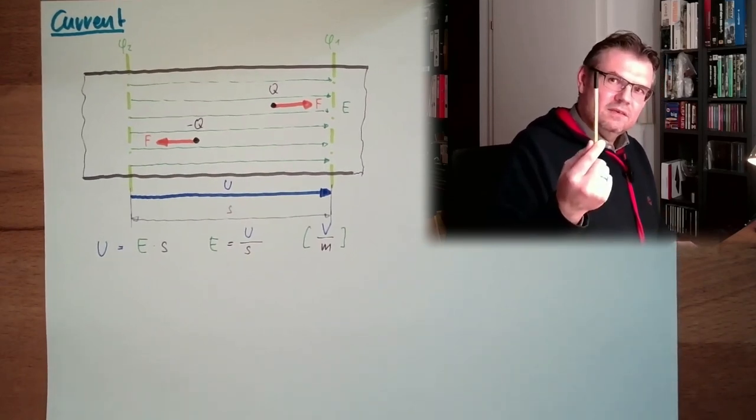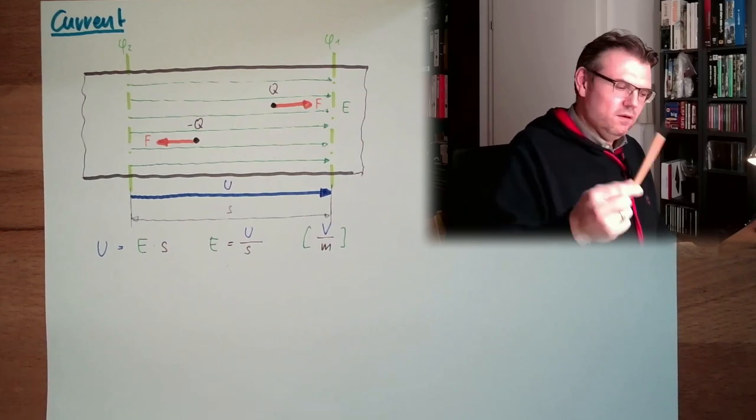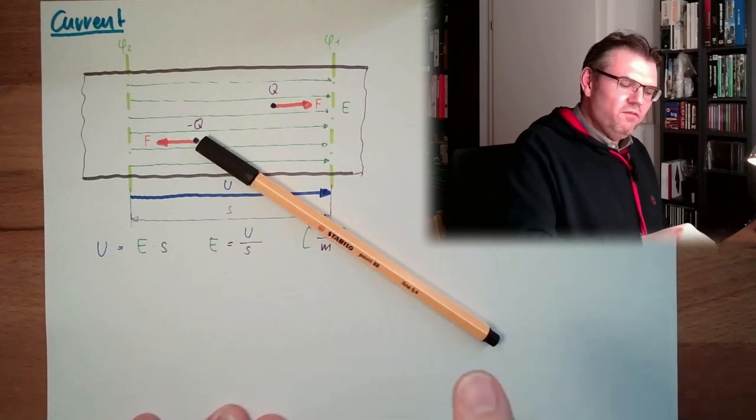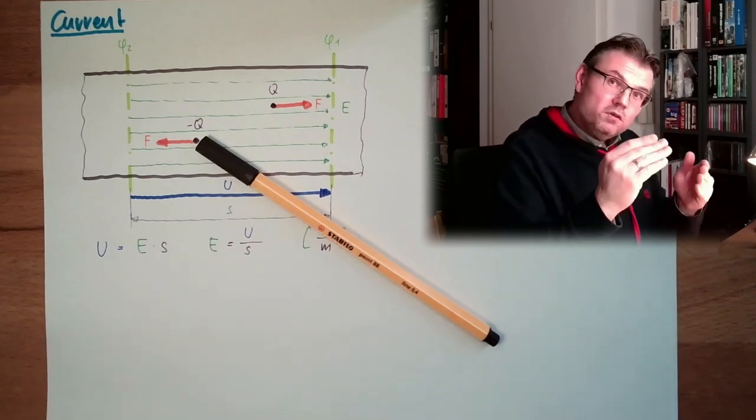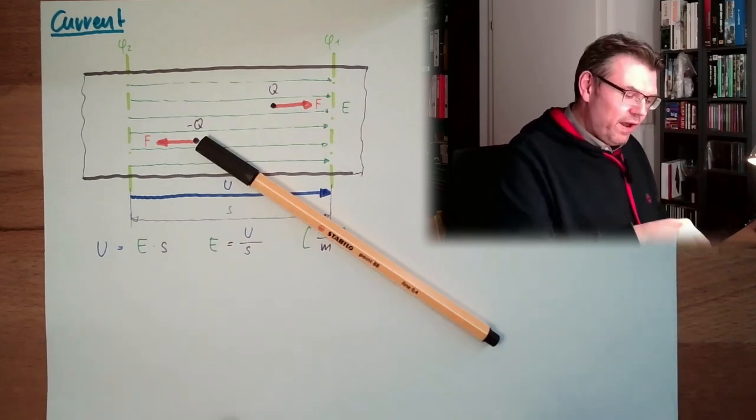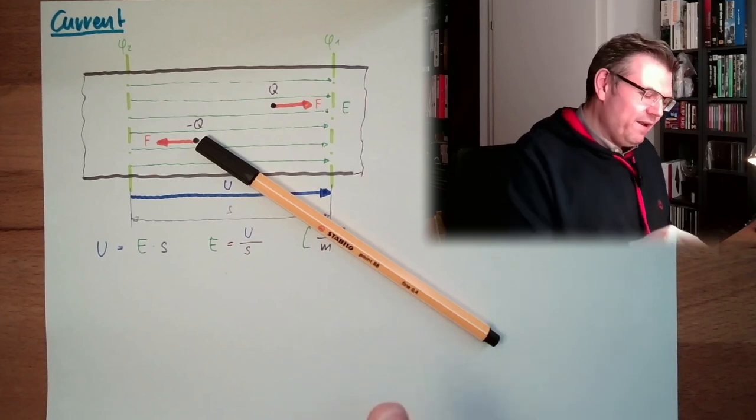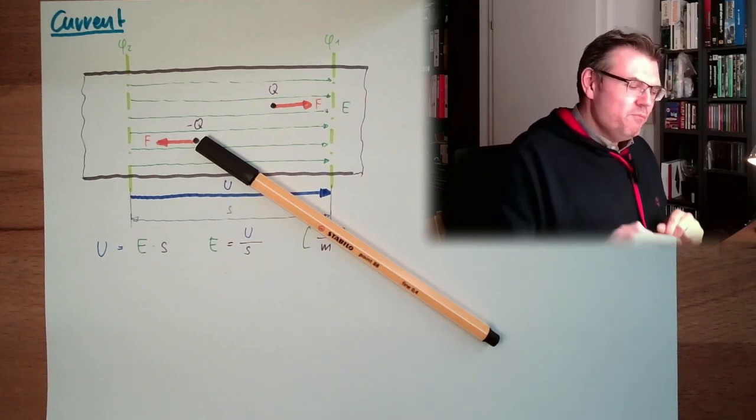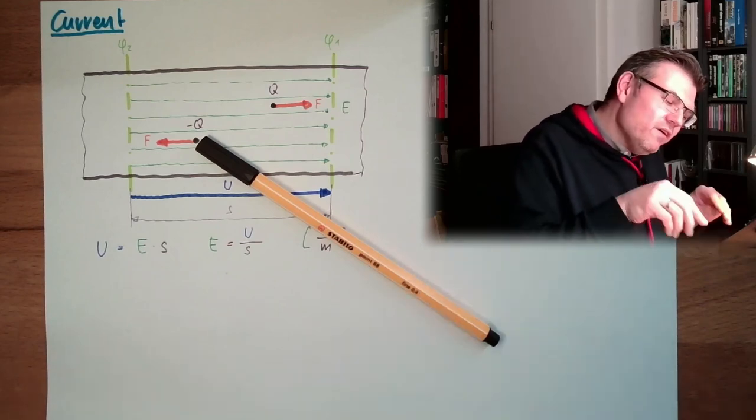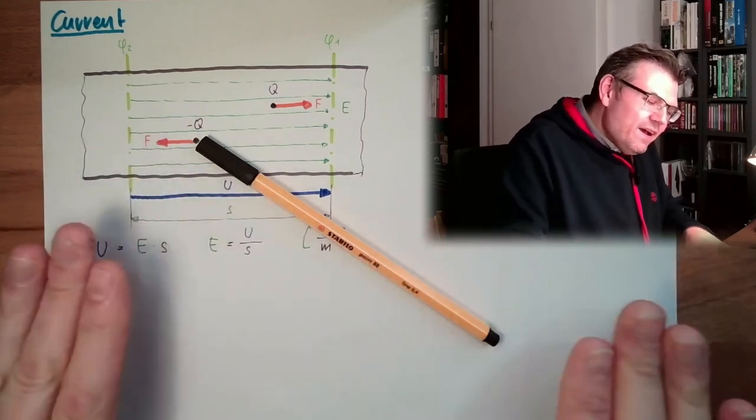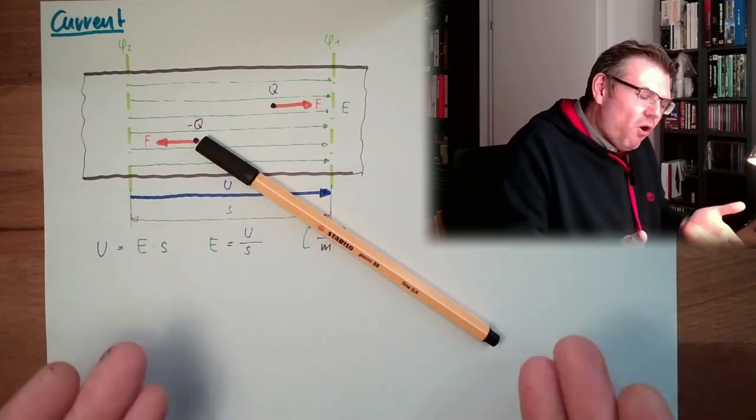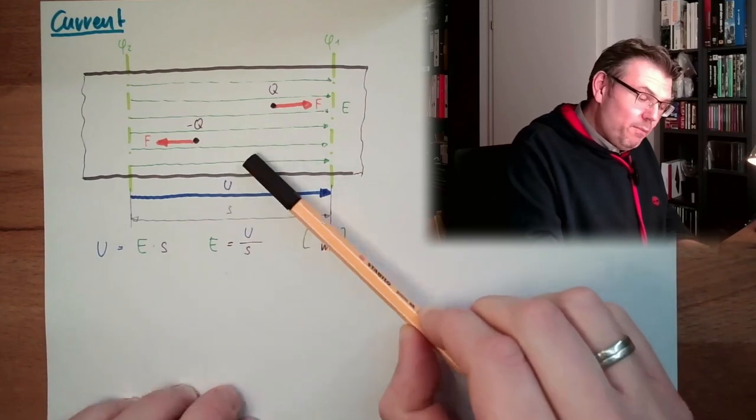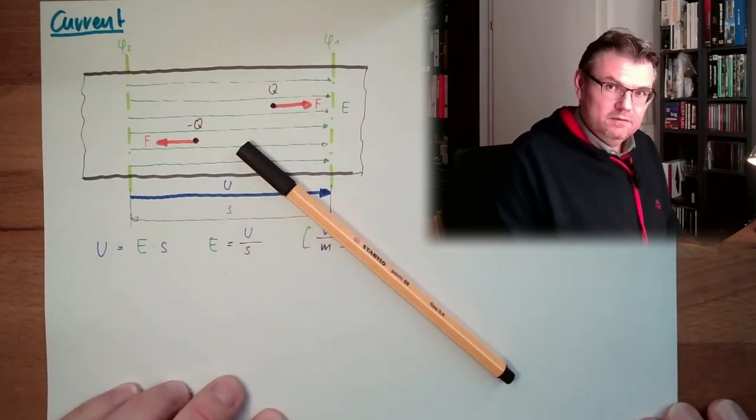Look at this pen. I have it here, let it fall. It did fall, it moved. The force was applied and it did move. And now, there's also a force applied but it does not move. Why? Because the movement is blocked. It cannot move. Once it is no longer blocked, it will fall further.